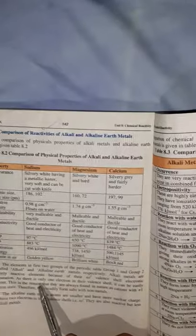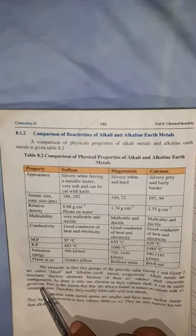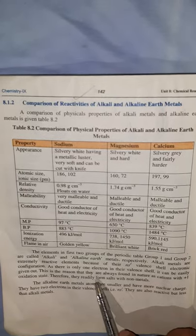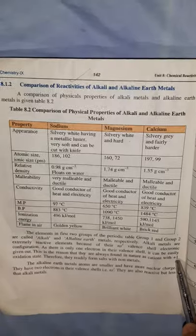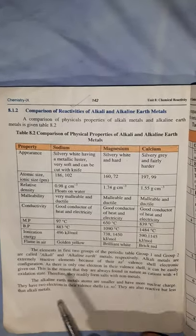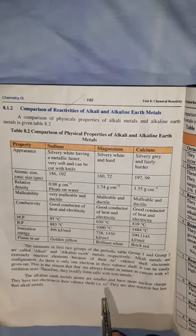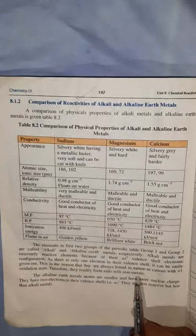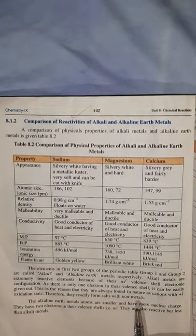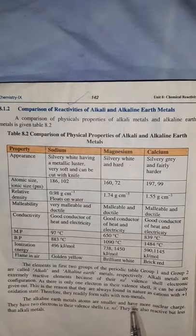Since group 1a has only one electron in the valence shell, it can be easily given out. One electron can easily be lost by the atom, and this is why they are always found in nature as cations with a +1 charge and oxidation state +1. Therefore, they readily form salts with non-metals, such as sodium chloride, sodium bromide, sodium iodide, and calcium chloride.